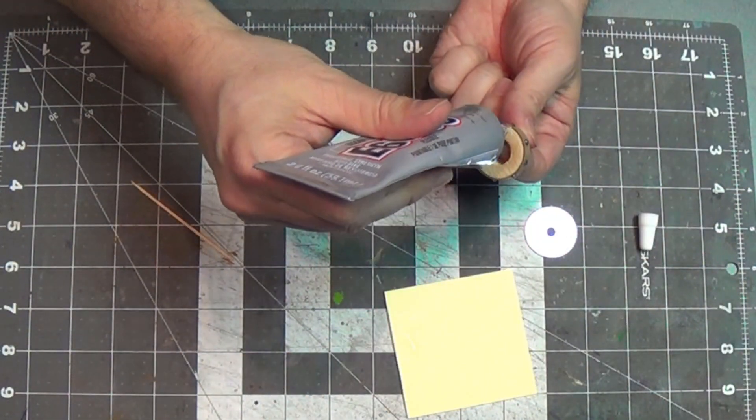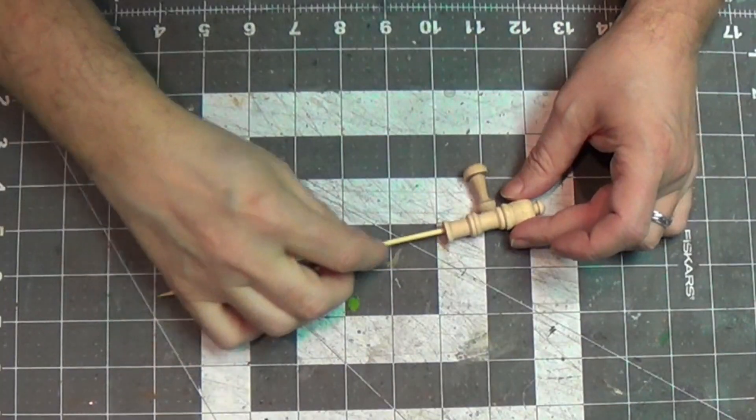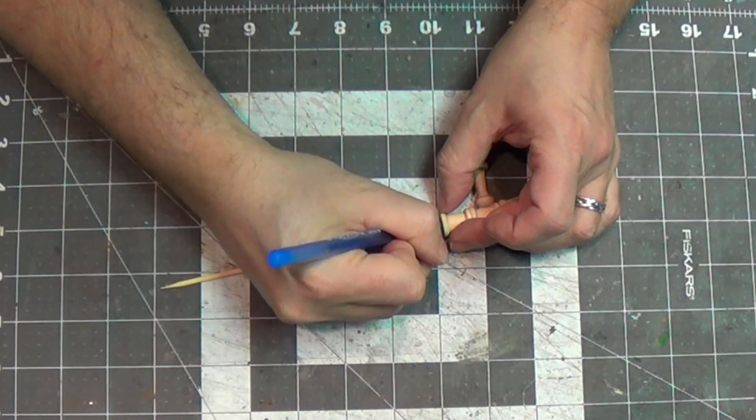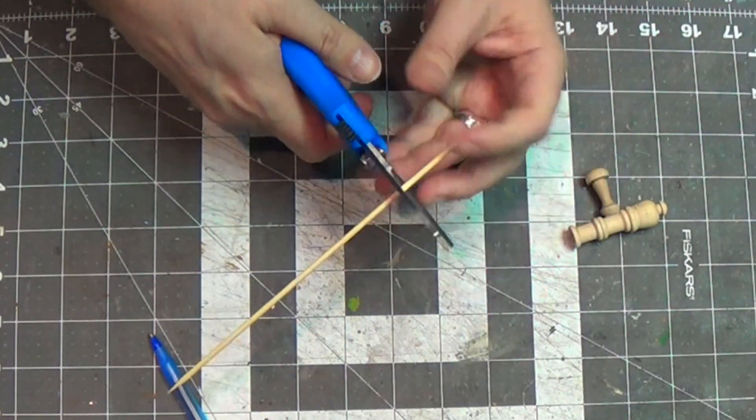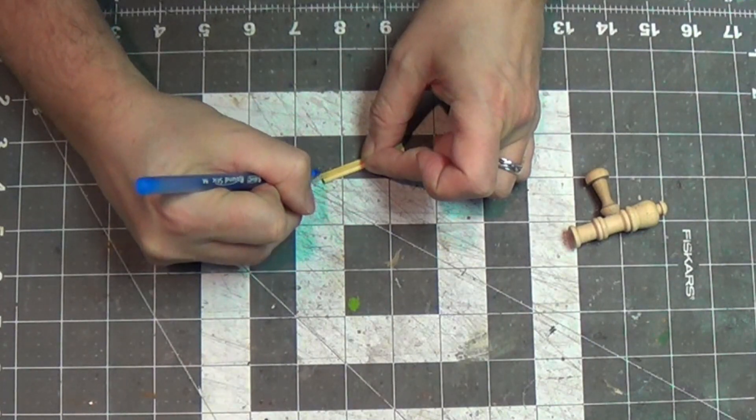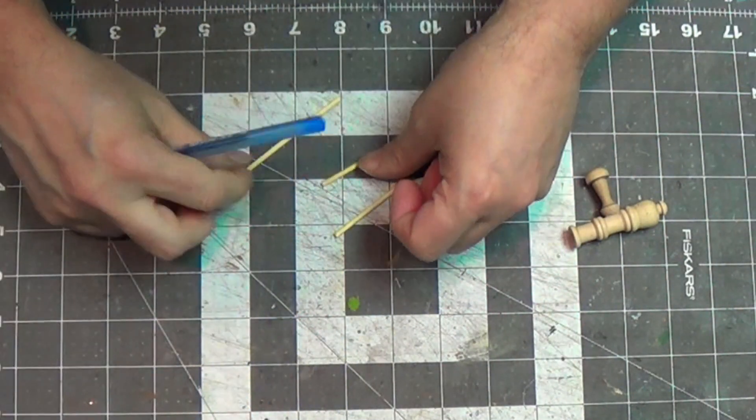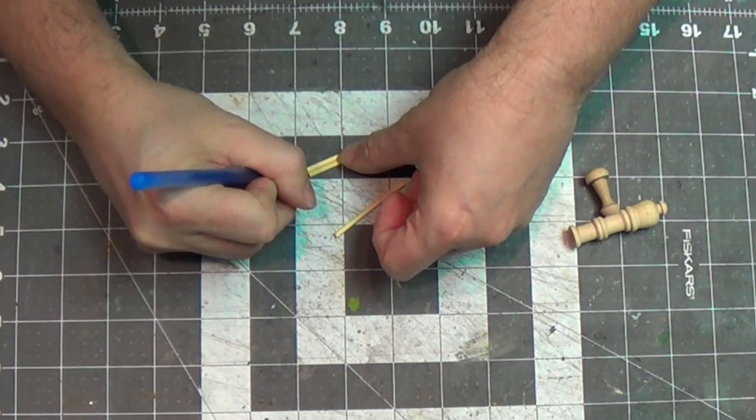Now I'm going to glue a washer to the bottom to give it weight so it won't be tipping over. Now I've got a barbecue skewer and I'm going to use these for the harpoons. And I've just measured to the end of the gun. It actually goes in the gun, which is pretty cool. And then I'll cut those pieces there. So I have ammunition for the harpoon gun.